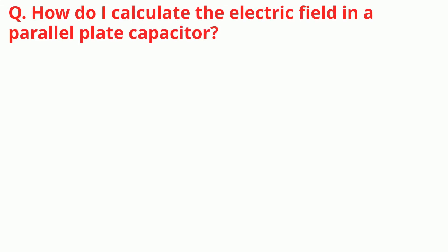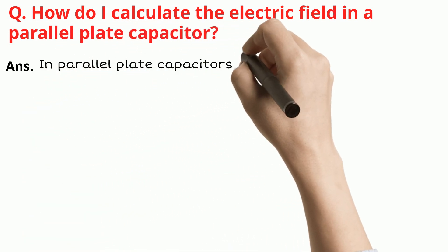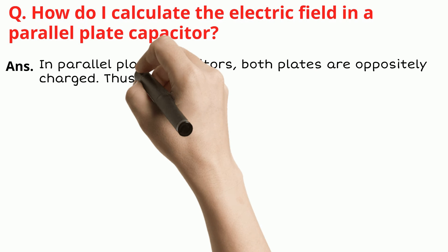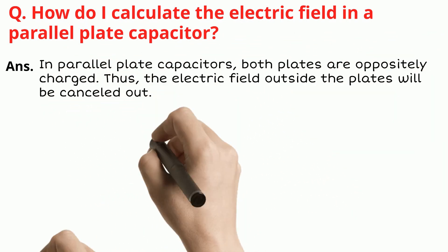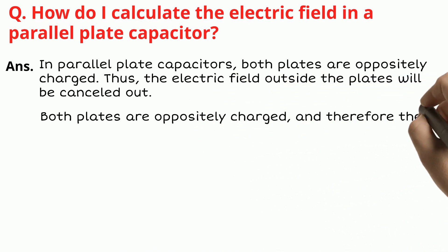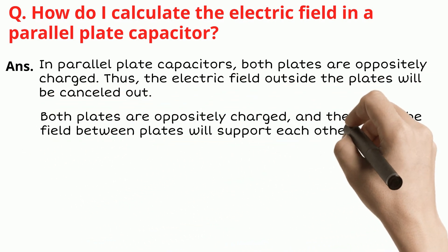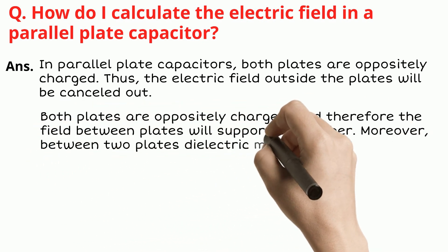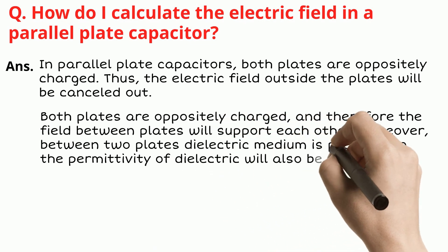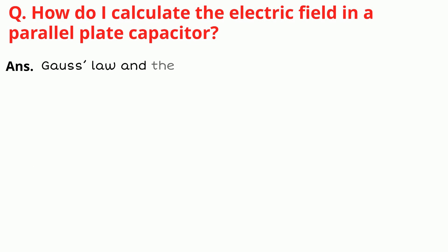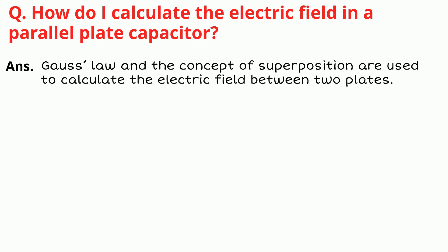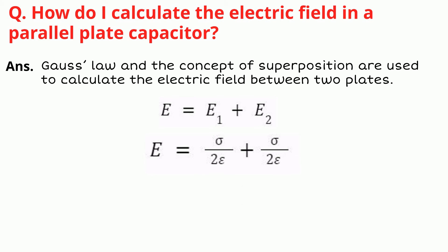FAQ: How do I calculate the electric field in a parallel plate capacitor? In a parallel plate capacitor, both plates are oppositely charged, so the electric field outside the plates will be cancelled. The fields between the plates support each other. With a dielectric medium present between the plates, the permittivity of the dielectric is also an essential factor. Using Gauss's law and the concept of superposition: E equals E1 plus E2, giving E equal to sigma upon epsilon, where sigma is the surface charge density and epsilon is the permittivity of the dielectric material.